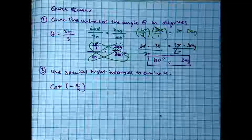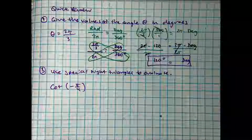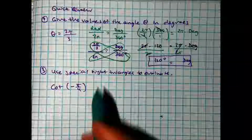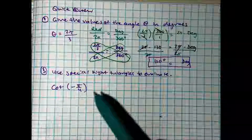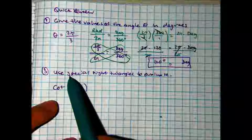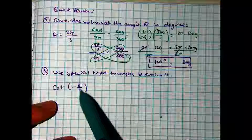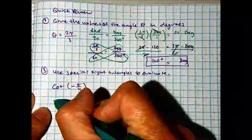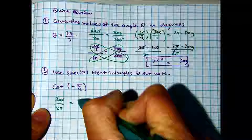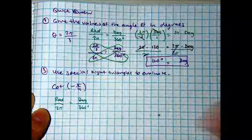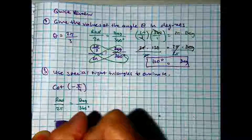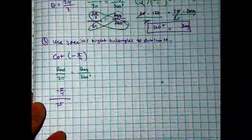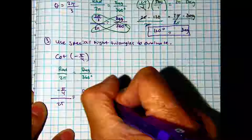Raise your hand if you got that. Question number 3, I'm going to do the same thing. It says: use the special right triangles to evaluate. I haven't taught you guys the unit circle yet, but we're still working on special right triangles. This radian measure doesn't make sense to us yet, so let's convert that into degrees. Radians over 2 pi equals degrees over 360. My radians is negative pi over 4, all over 2 pi. Equals degrees over 360 degrees.